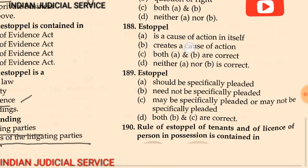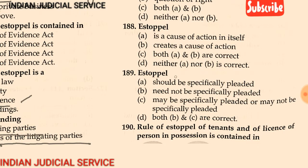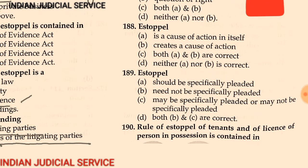Question 188: Estoppel — (A) is a cause of action in itself, (B) creates a cause of action, (C) both A and B are correct, (D) neither A nor B is correct. The answer is option D: neither A nor B is correct.